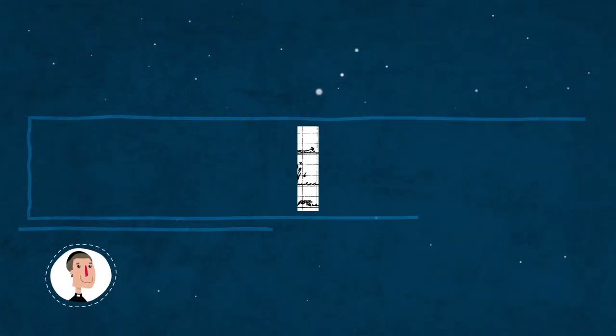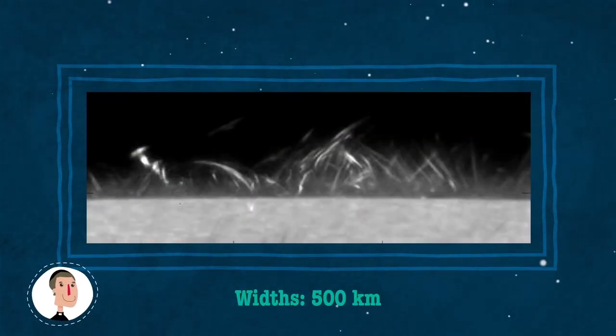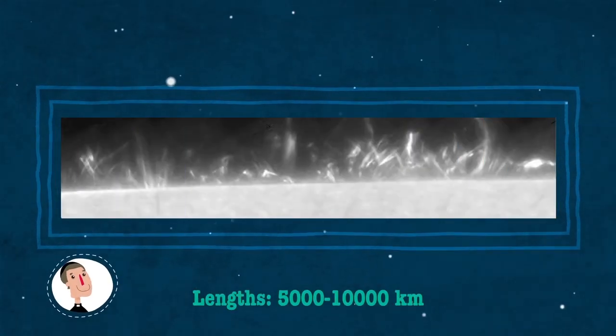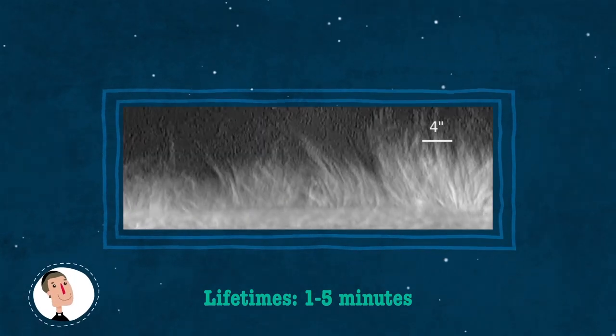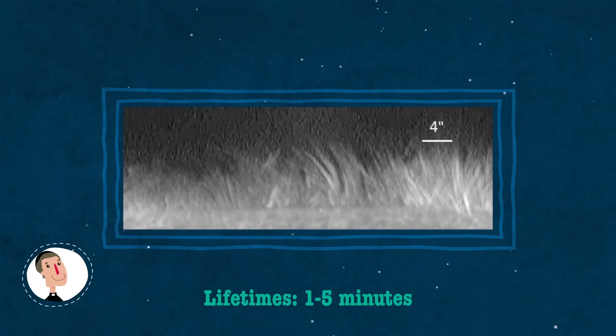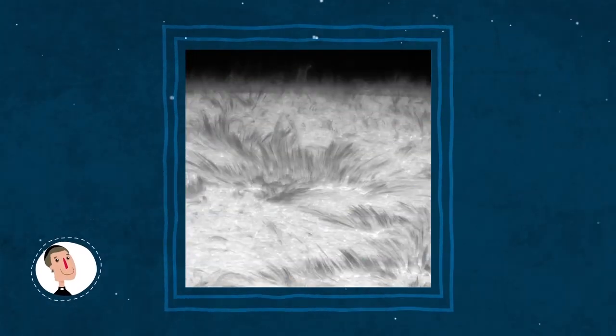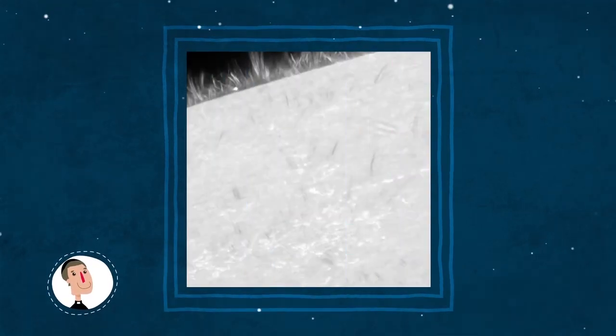Las espículas son chorros de gas en la atmósfera solar. Tienen 500 kilómetros de ancho y longitudes de varios miles de kilómetros. Pero sus vidas son muy cortas, solo unos minutos. Aparecen y desaparecen continuamente. Se estima que en cada momento hay cientos de miles de espículas en nuestra estrella, distribuidas por todo el disco.